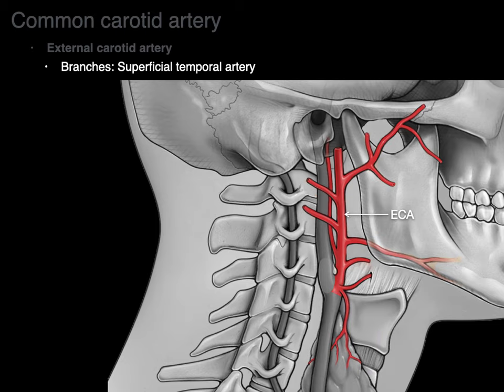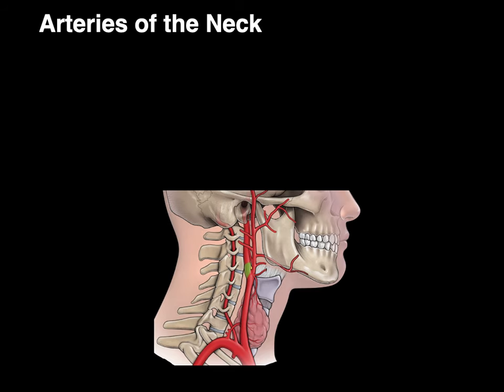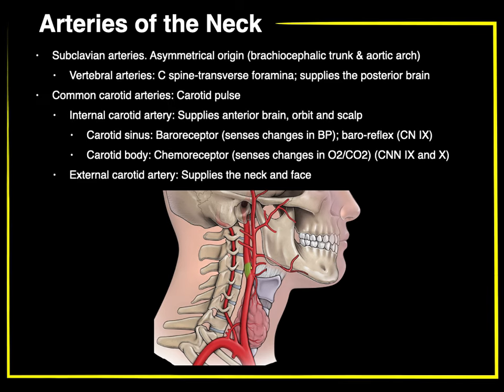The terminal branch of the external carotid is the superficial temporal artery. As its name implies, it is superficial in the temporal region, supplying the scalp and face. And those, my friends, are all the arteries in the neck in a nutshell.